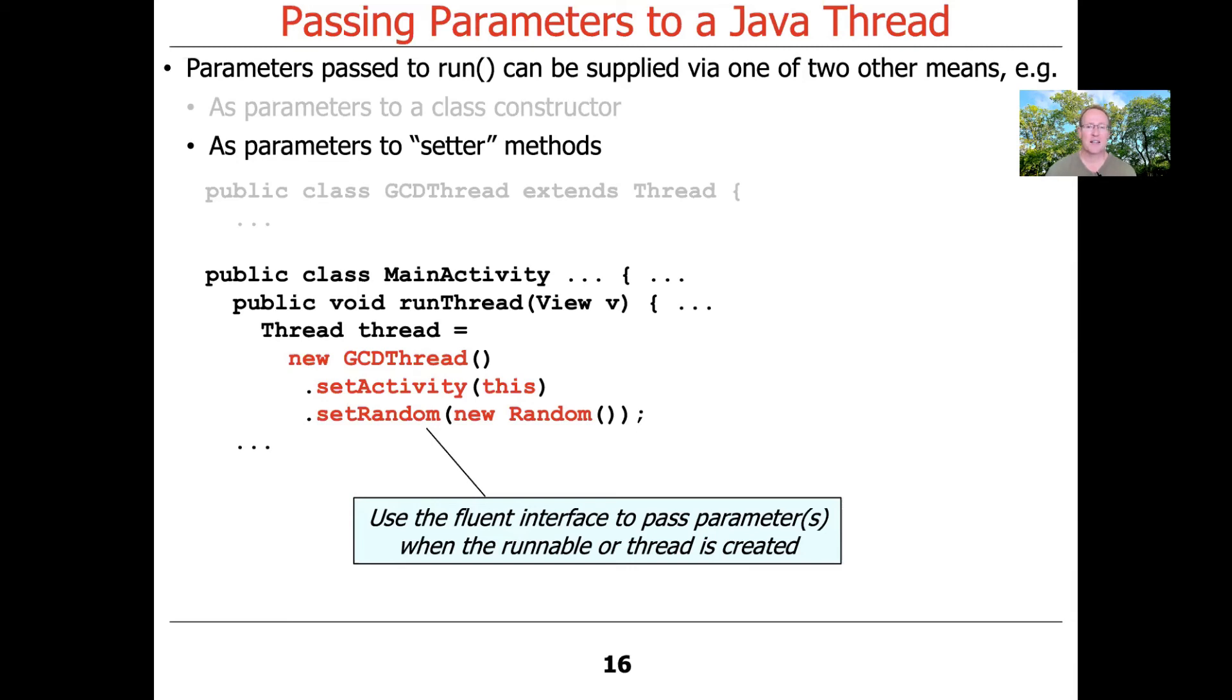And what this does is it makes a new GCD thread. And then it says set activity this because it's the main activity we're trying to set. And then it says set random new random. And notice how we are chaining together the calls to set activity and set random